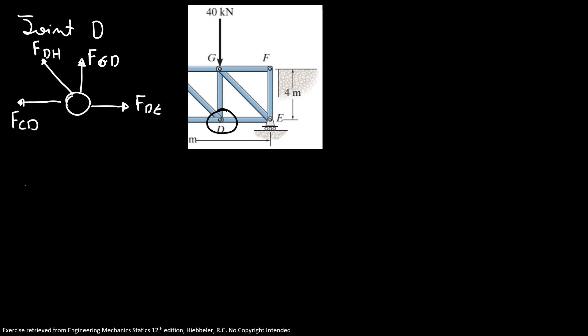We know that the sum of forces in Y direction equals zero. So FGD plus FDH sine of 45 degrees equals zero. FGD is equal to minus minus 5.